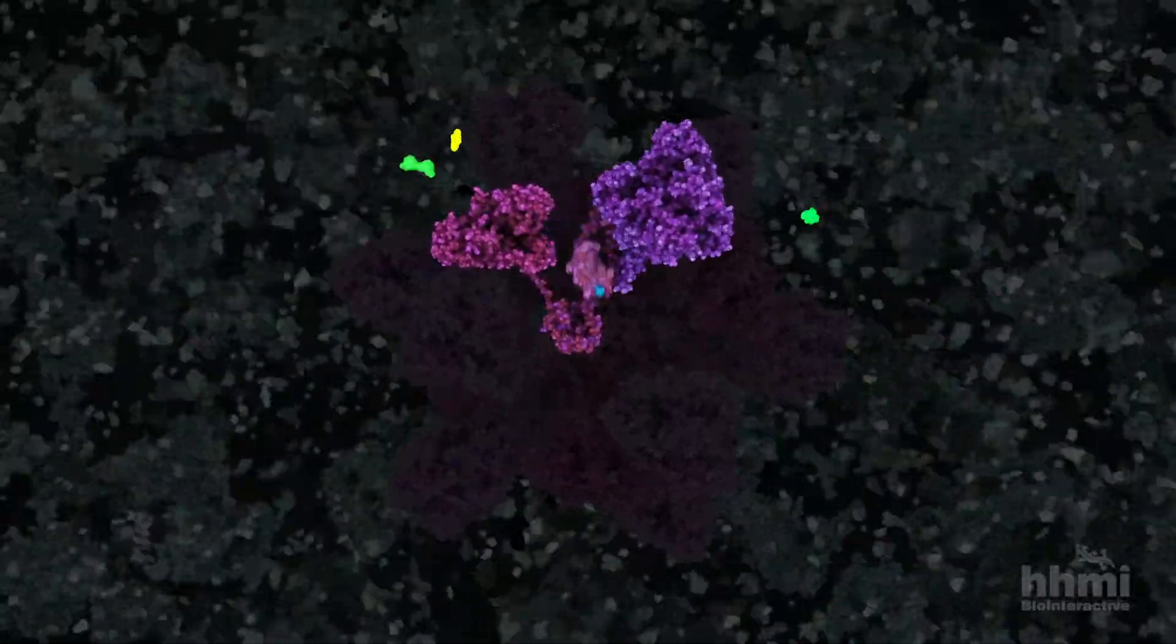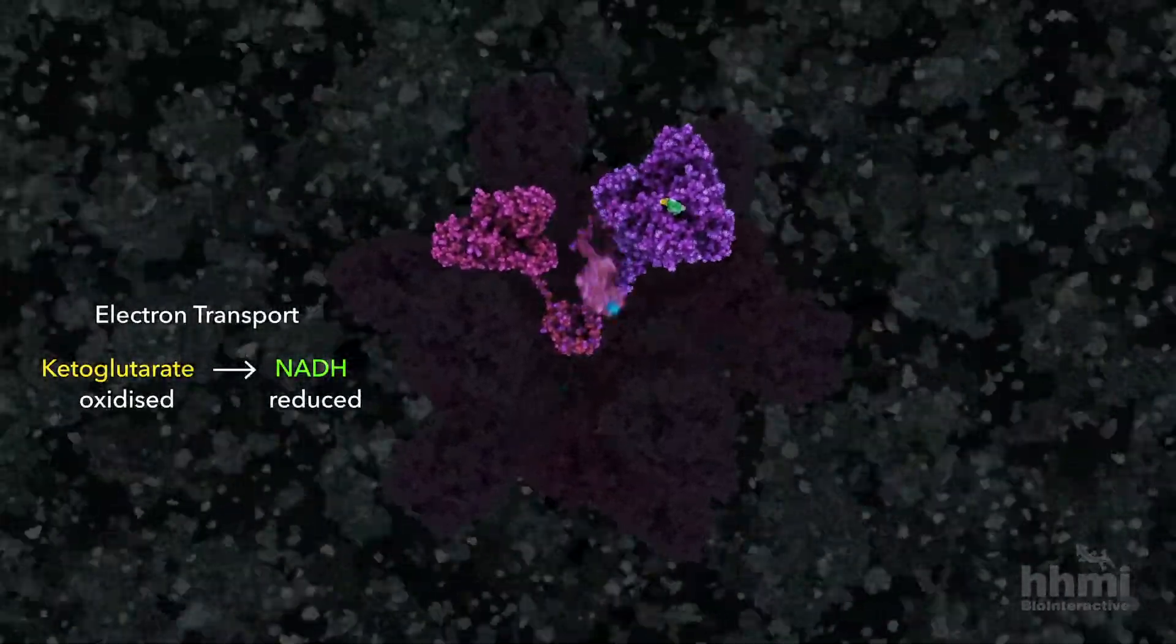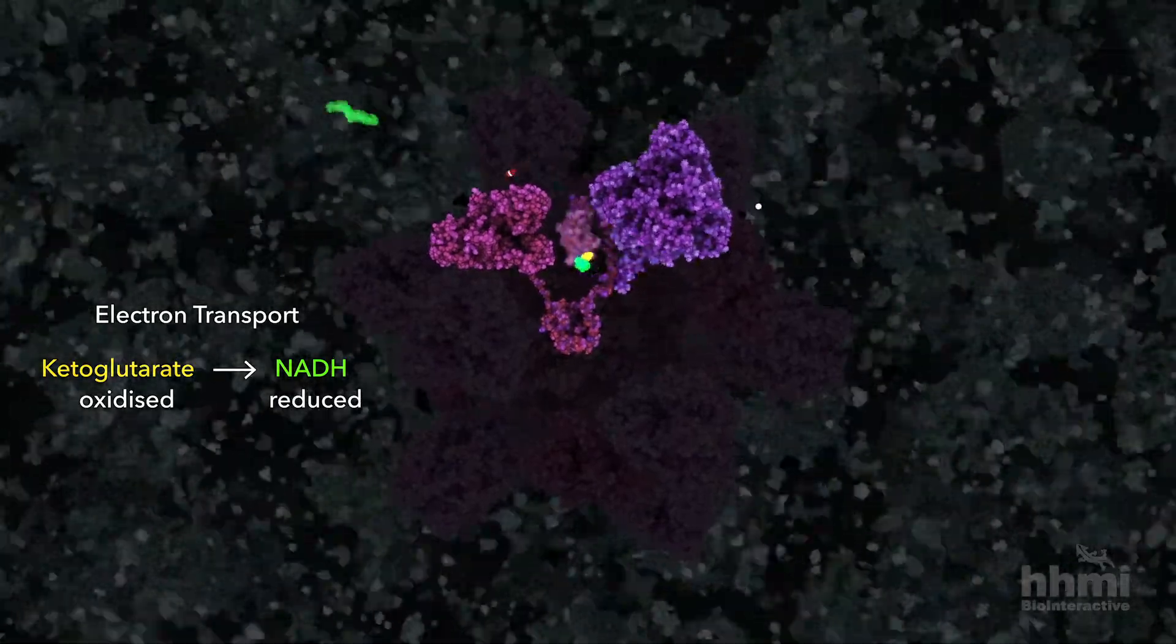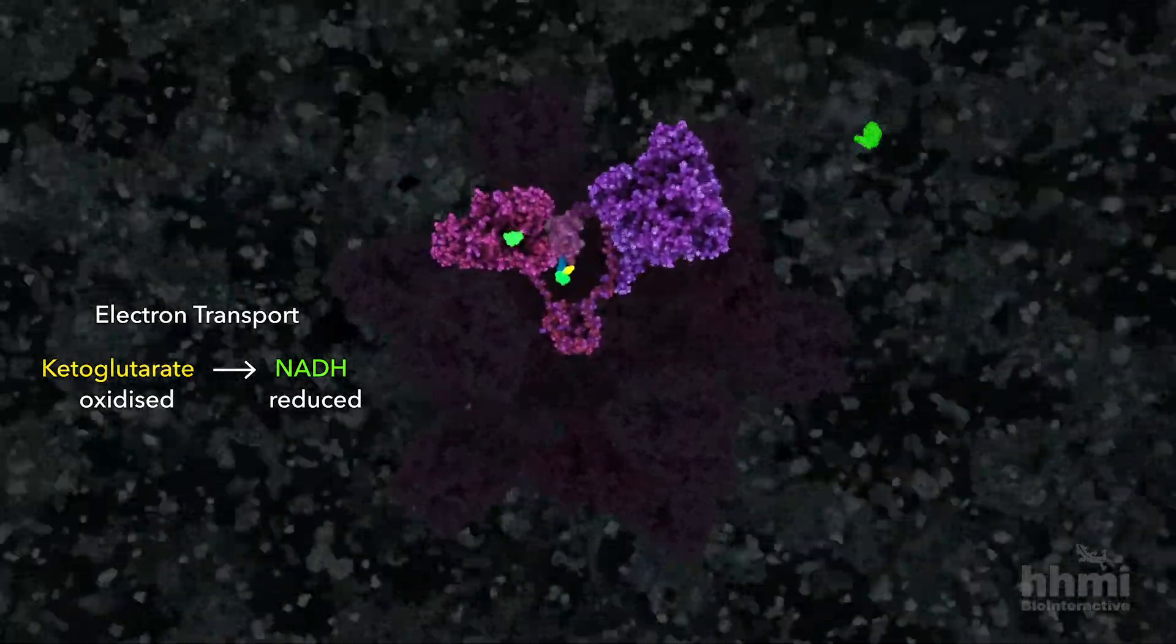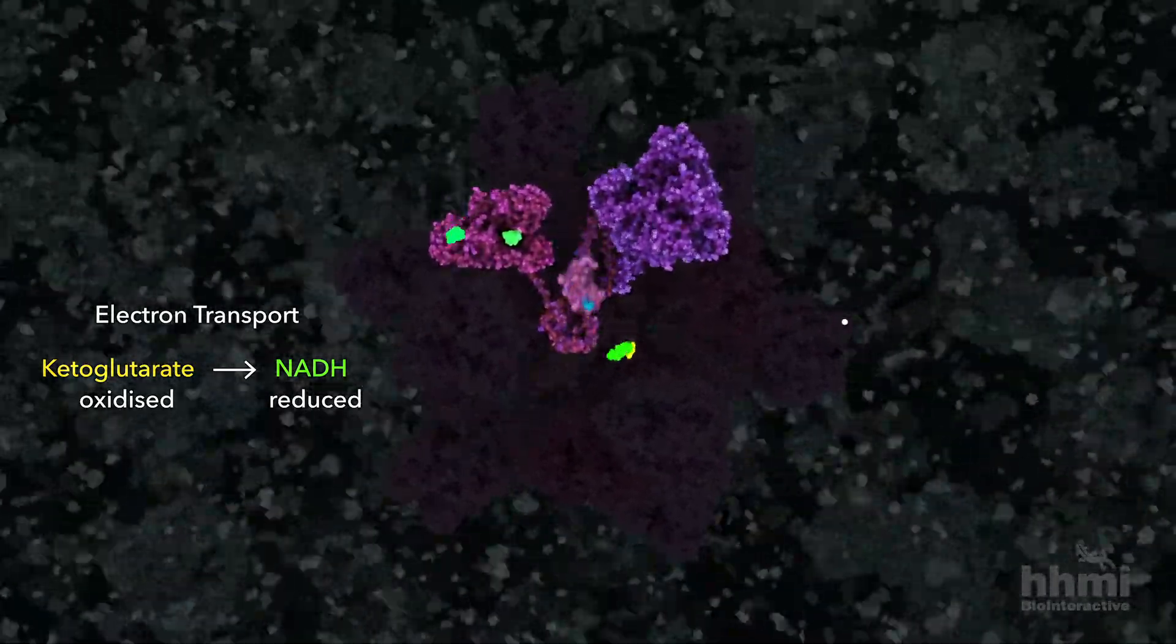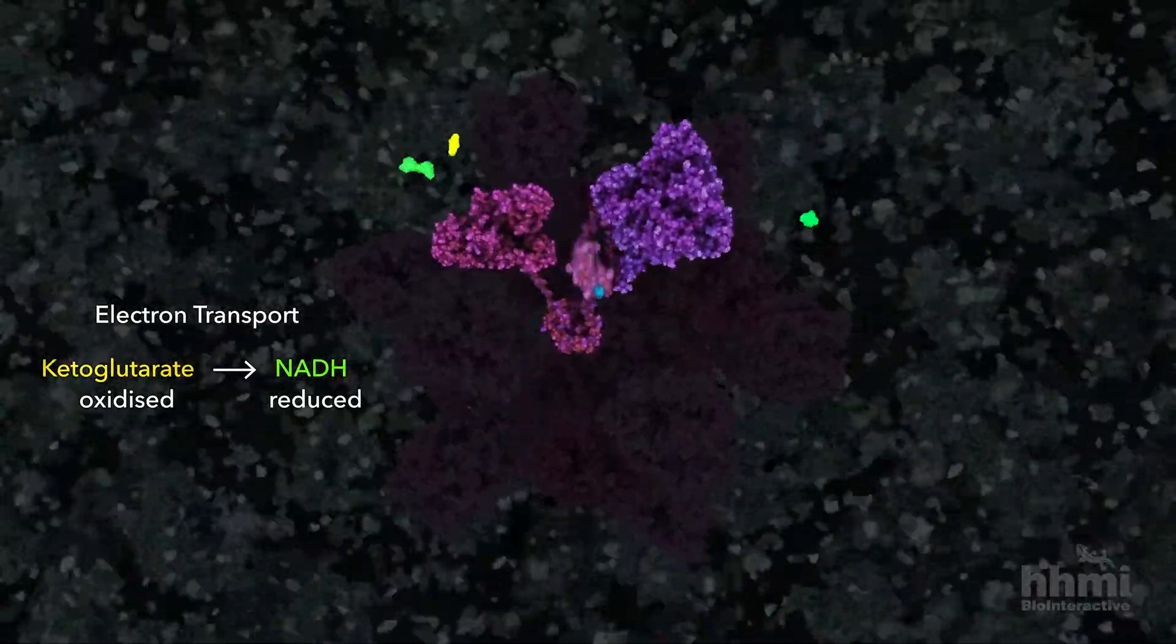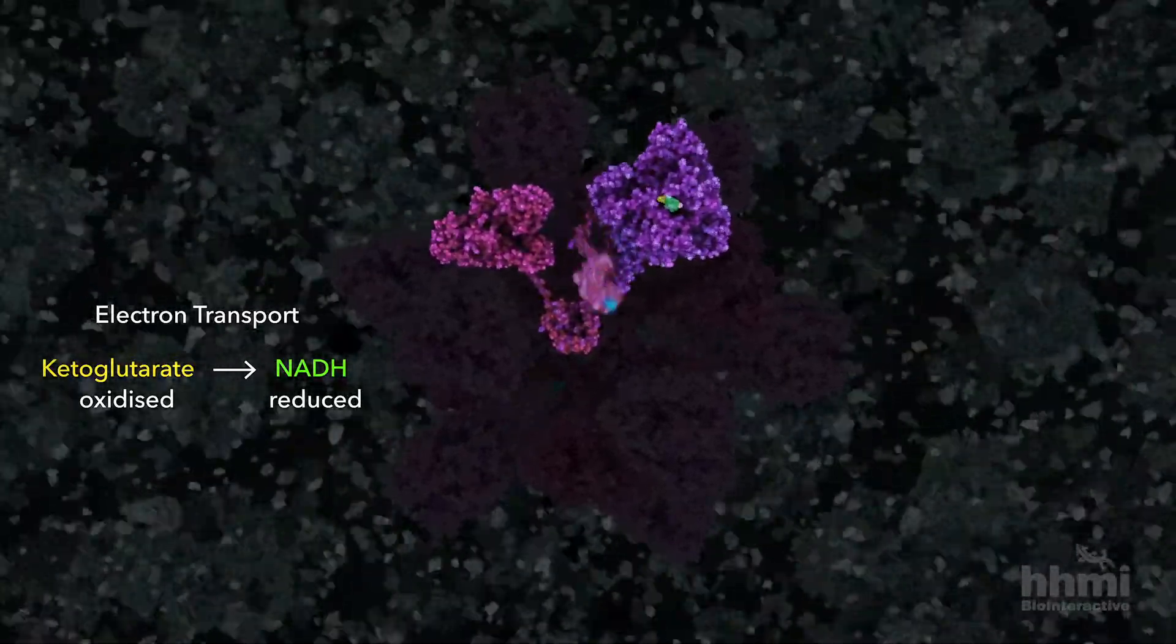The electron from ketoglutarate oxidation is retained by the tethered enzyme before passing it to coenzyme NADH, which delivers electrons to the electron transport chain.